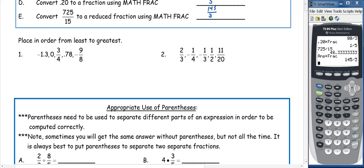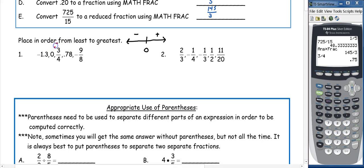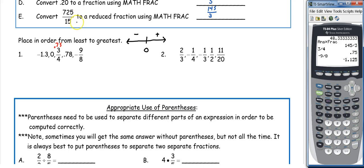Now let's look at placing fractions and decimals in order from least to greatest. Think about it as a number line: zero in the middle, negative numbers to the left, and positive numbers to the right. To compare and order from least to greatest, it's helpful to convert them all to decimals. So we need to convert 3 fourths: 3 divided by 4 is 0.75. And negative 9 divided by 8 is negative 1.125.